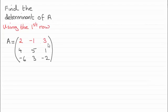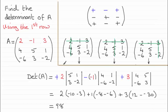Welcome back. If you had a go, the answer is 98. To do that, you should have done something along these lines. Remember that we need the signs that are associated with the first row.